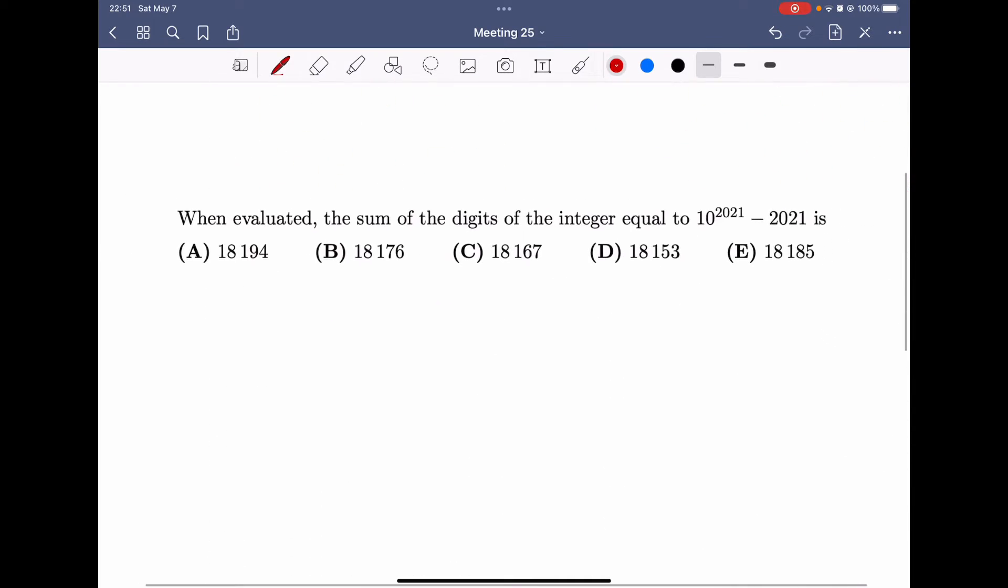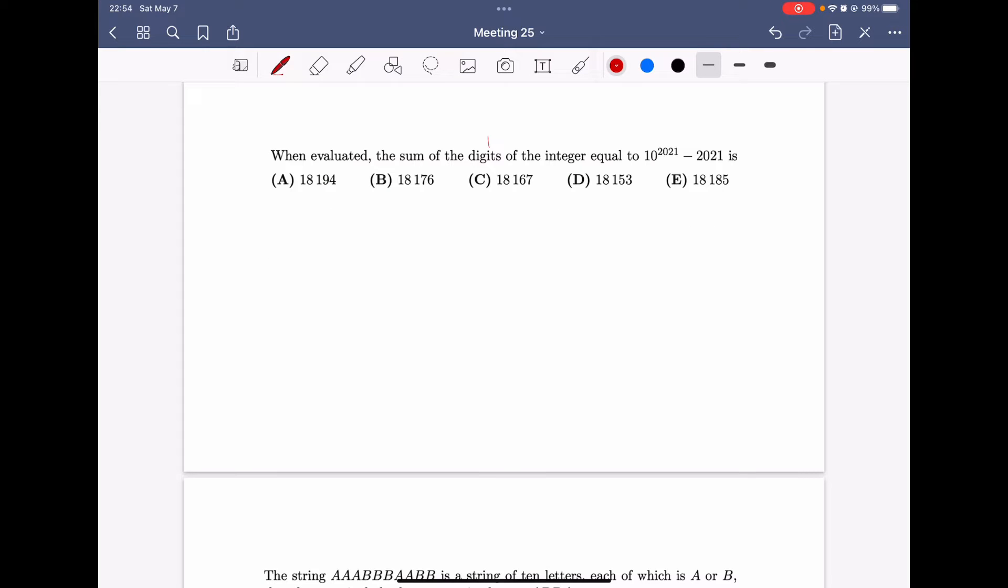Okay, so to do this question, we need to first know that 10,000 minus 2021 equals 7979. And 100,000 minus 2021 is 97979. So, which means, one more 0 after 1, and there will be one more 9 in front of 7979.